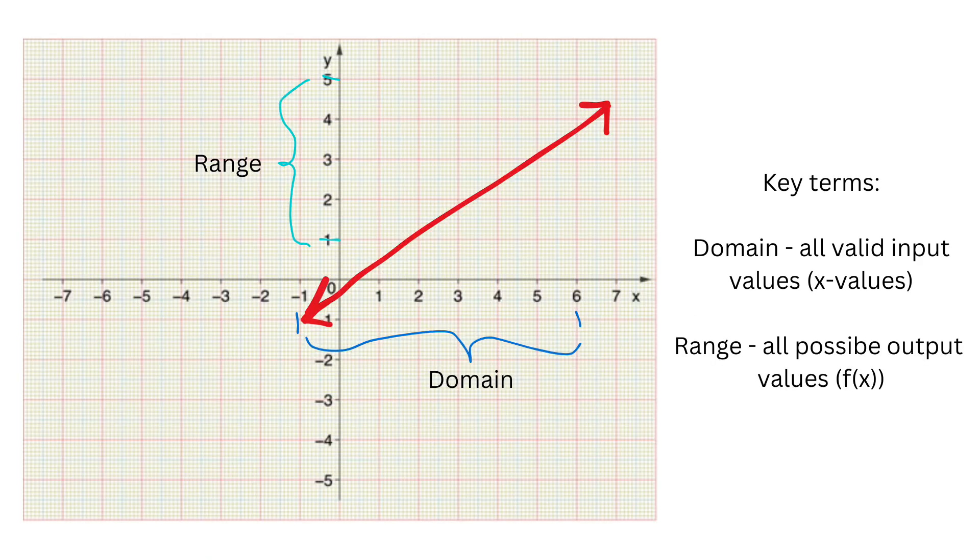Some key terms are domain and range. Domain means all the x values that you can use, so for example from 0 to 10. Range means all possible f of x values or all possible y values. It's like the same thing as domain but this time in the y-axis.